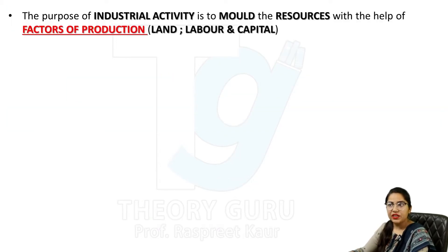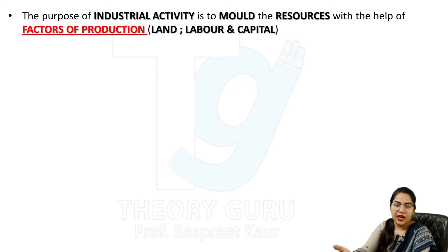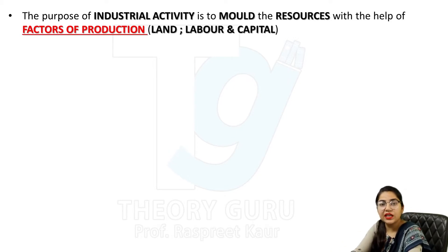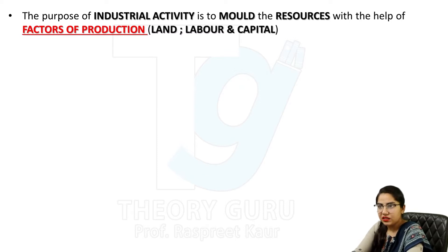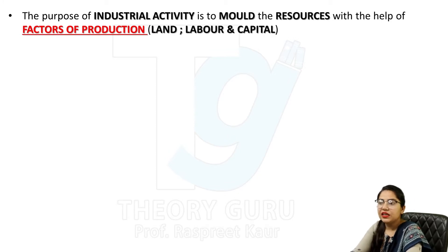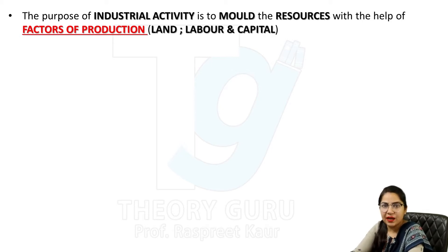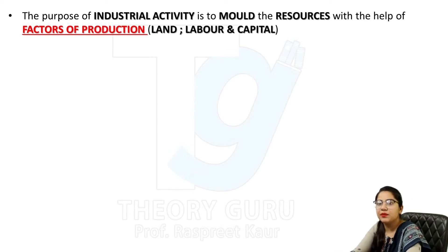The purpose of industrial activity is to mold the resources with the help of factors of production — land, labor, and capital. Without land we cannot do production. Labor is also one of the important factors of production. Capital is the lifeblood of business — capital means money, finance. Without these factors of production, we can't do business.